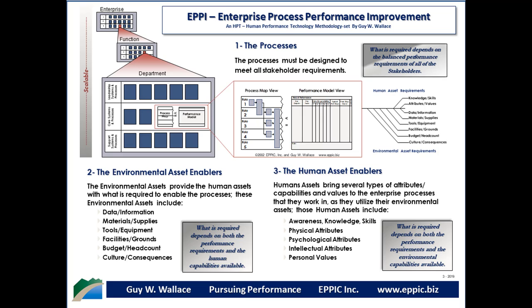There's the core processes of an organization, the leadership processes of an organization, and the support processes of an organization. We can use the organizational chart to organize our view of the processes that we need to manage and perhaps improve.